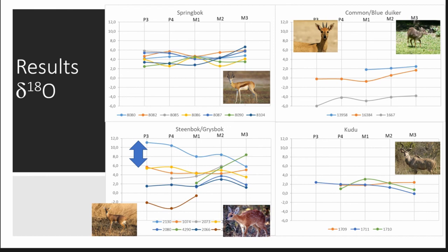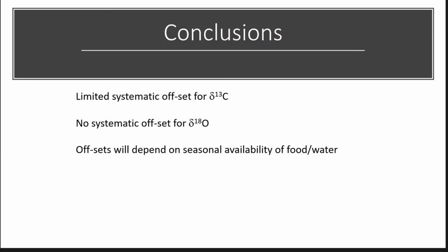The largest range observed is six parts per mil between the P3 and the M3. The range of δ18O of rainfall in Cape Town has been shown to vary up to 11 parts per mil, which contributes to this larger amplitude compared to carbon. The δ18O of faunal tissues will average out the precipitation signal to some extent — not only because of averaging during tissue synthesis, but also because oxygen is derived from food as well as water. Our study showed there is limited systematic offset for carbon along the tooth row, but it is species-specific. For δ18O, there is almost no systematic offset, and for animals with tightly constrained birth seasons it will depend on whether seasonal fluctuations in oxygen and food availability occur.